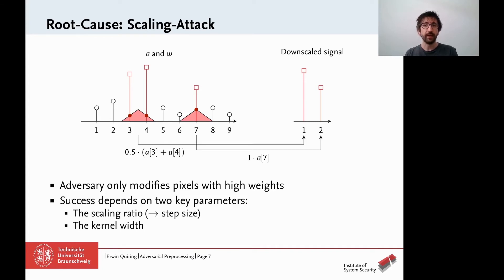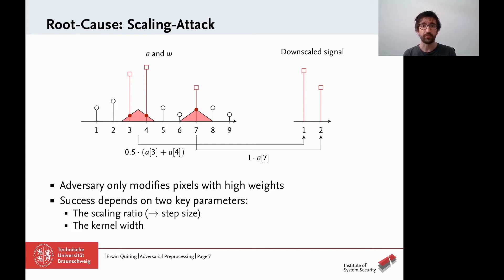The success of this attack depends on two key parameters. The scaling ratio determines the step size of the window — the larger the step size, the more pixels can remain unchanged and the attack becomes less visible. The kernel width also matters — the larger the kernel width, the more pixels are considered for downscaling, requiring the attacker to modify more pixels and making the attack more visible. Different scaling algorithms and libraries differ in how they define the kernel window and the moving operation. Interestingly, it is quite common to fix the kernel width irrespective of the scaling ratio, so while the adversary cannot control the kernel width, she can control the scaling ratio, enabling a scaling attack.